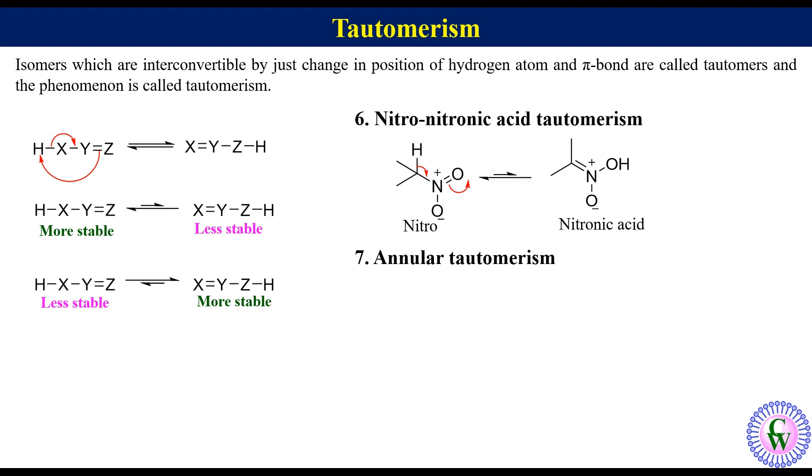Annular tautomerism. In this type of tautomerism, the movement of labile proton is restricted to the ring atoms. For example, 3-methyl-1H-pyrazole and 5-methyl-1H-pyrazole are annular tautomers. Another example is purine, which has 4 tautomers, 9H, 7H, 1H and 3H. Out of these 4, 9H and 7H are the predominant tautomers.